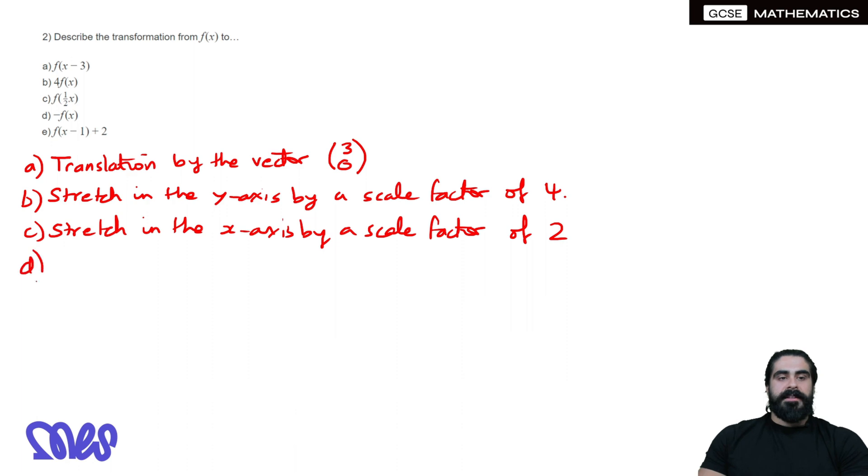-f(x): The negative outside the f is multiplying all the y-values by -1. If you have y-values at the positive side, above the x-axis, and you multiply by -1, they're going to come below, so it's a reflection in the x-axis.